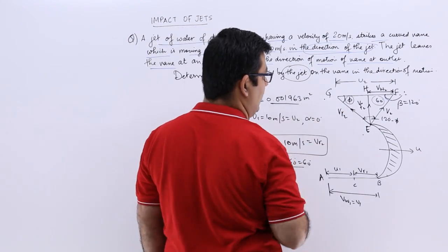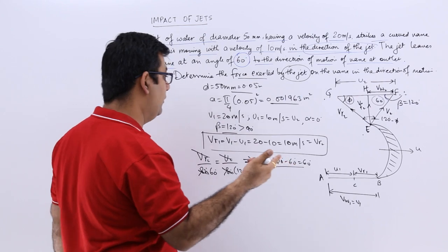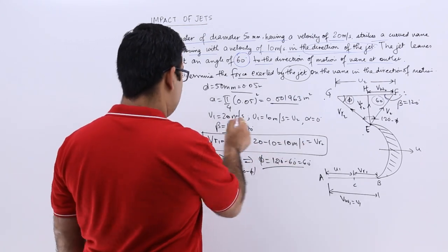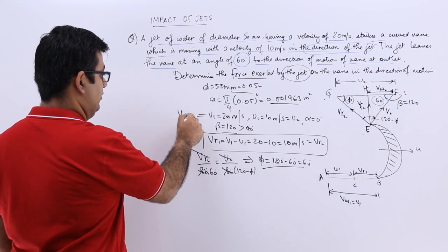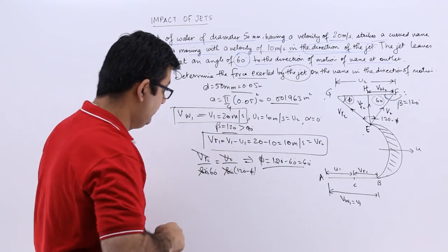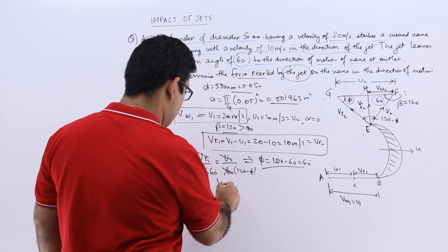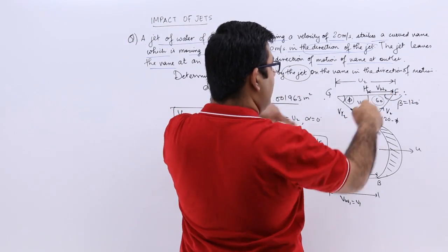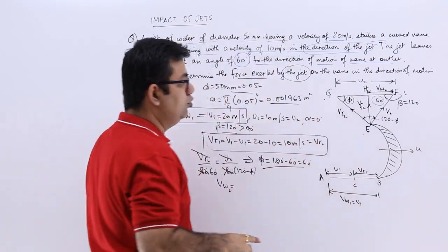Now with this in place, let's find out vw2, because we have vw1. What is the value of vw1, which is equal to 20, because we need this in the calculation of the force.